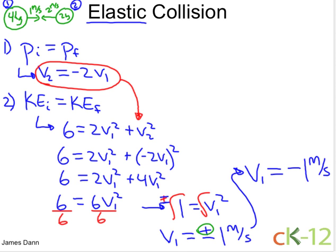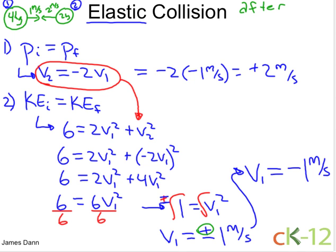To find V2, we plug in: negative two times negative one gives positive two meters per second. So they just swap directions. After the collision, the four kilogram ball goes backwards at the same speed, and the two kilogram ball also reverses direction. That's how you solve elastic collision type problems.